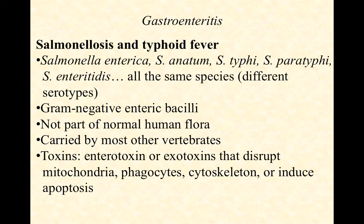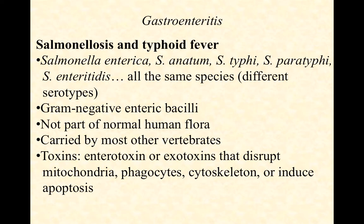The word after Salmonella is often not italicized and often capitalized — we call that the serotype or serovar, meaning serum variety. We notice things like enterica, enterotitis, anatom, typhi, and paratyphi. These are gram-negative enteric bacilli, not part of our normal flora — they are professional pathogens. Most other vertebrates do carry them asymptomatically, so the feces of other animals is a great vector for spreading them into our food supply.